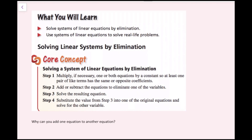The steps for solving a linear system of equations by elimination are: Step 1 — multiply, if necessary, one or both equations by a constant so at least one pair of like terms has the same or opposite coefficients. Step 2 — add or subtract the equations to eliminate one of the variables. Step 3 — solve the resulting equation. Step 4 — substitute the value from Step 3 into one of the original equations and solve for the other variable.